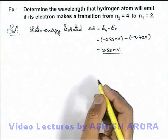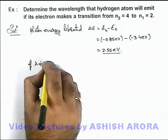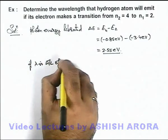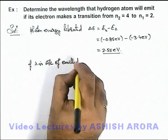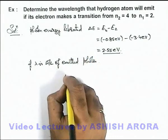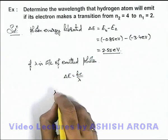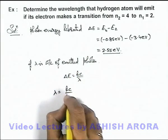If this energy is emitted, if lambda is wavelength of emitted photon, we can write this energy delta E equals hc by lambda, so the value of wavelength will be hc over delta E.